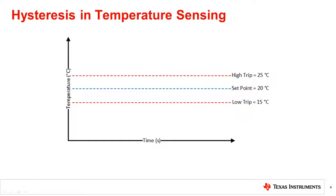Now let us consider the same example with a set point of 20 degrees Celsius and hysteresis of plus or minus 5 degrees Celsius. The band between the high trip and low trip is called the hysteresis band.